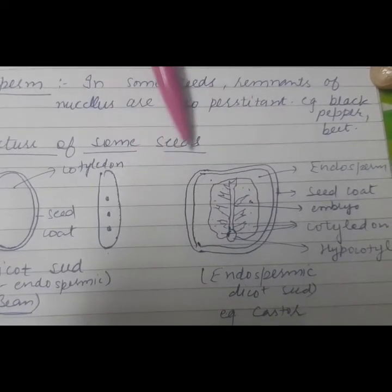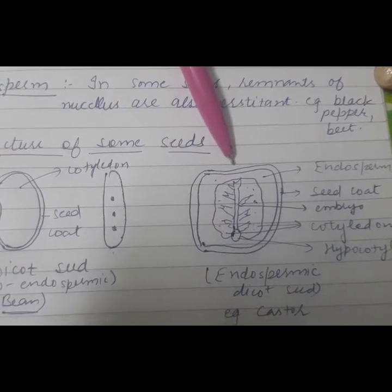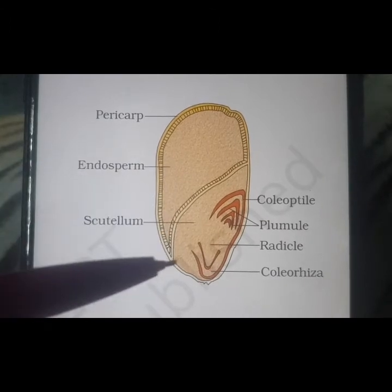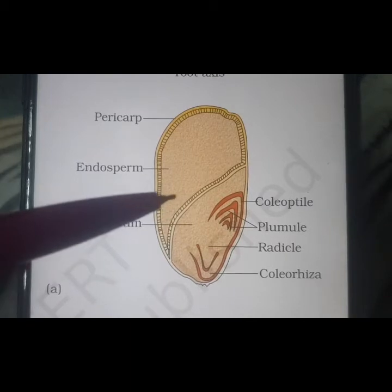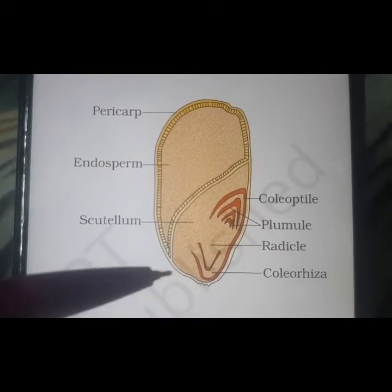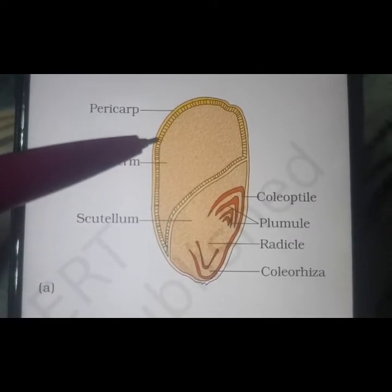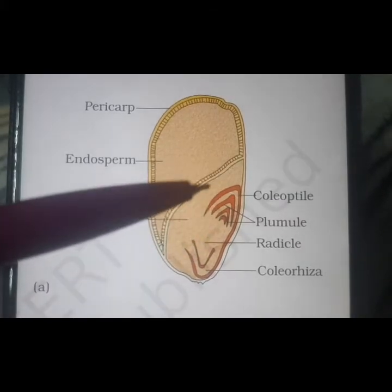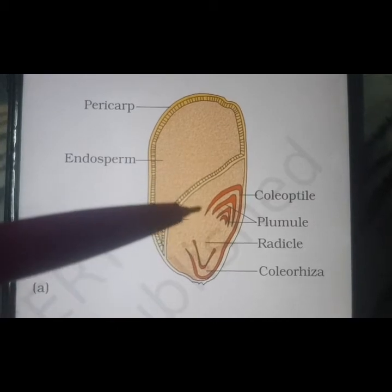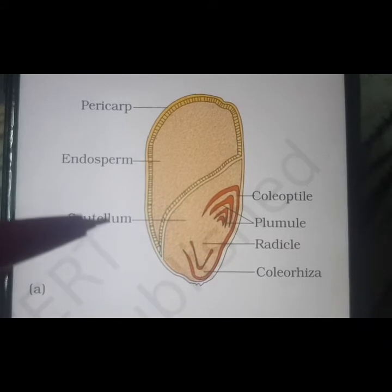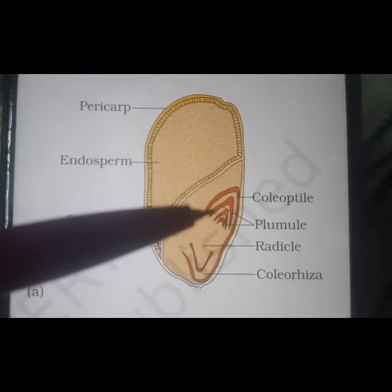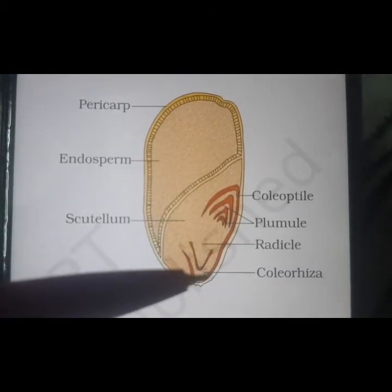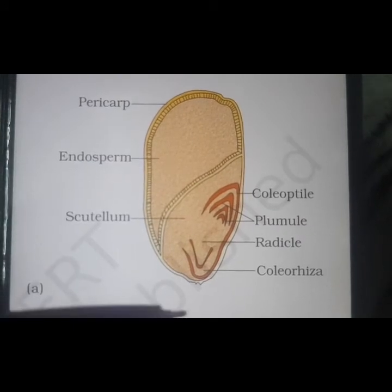The lower portion is called the hypocotyl. Now let us see the structure of a monocot endospermic seed — example is maize. The papery covering over the seed is the seed coat. Inner to the seed coat is the endosperm, which is the large portion since it is an endospermic seed. The inner portion is the cotyledon, called scutellum. The upper portion is the plumule and the lower one is the radicle. The plumule is covered with coleoptile and the radicle is covered with coleorhiza.